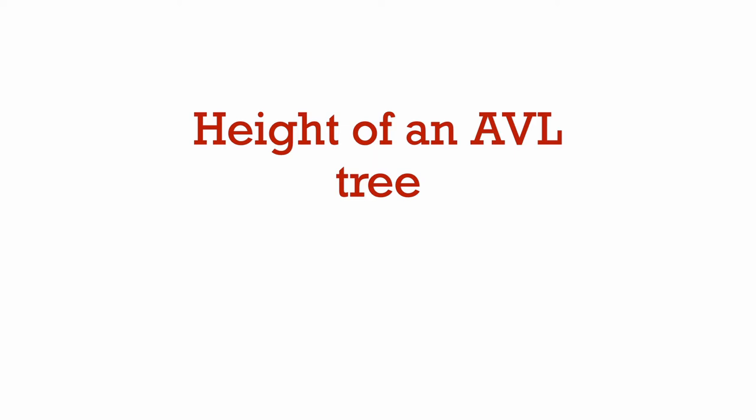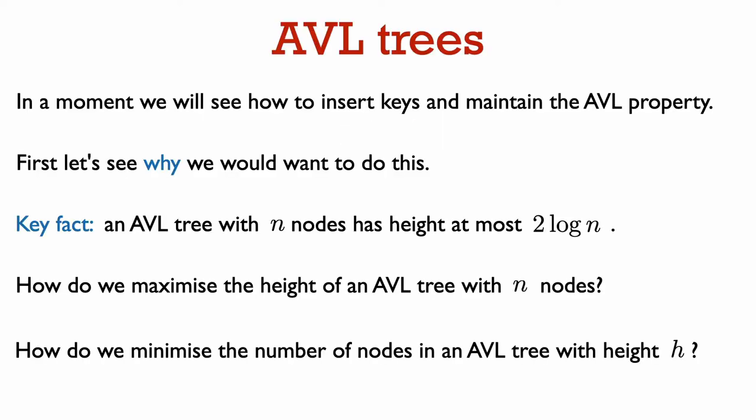Now let's see what the AVL property — the fact that every node has balance factor either minus one, zero, or one — implies for the height of the tree. What we will see is that in an AVL tree with n nodes, the height is always at most two times log n. Now we see why the AVL property is so good: it ensures that the height of the tree is close to as small as possible. To see why the AVL property implies this, we ask ourselves: suppose that we have an AVL tree with n nodes, what is the maximum possible height? We want to show that this maximum possible height is at most two times log n.